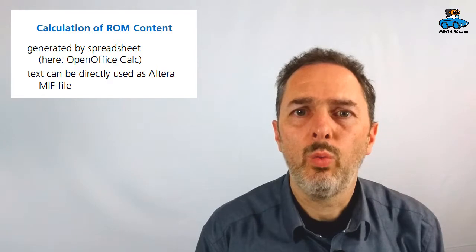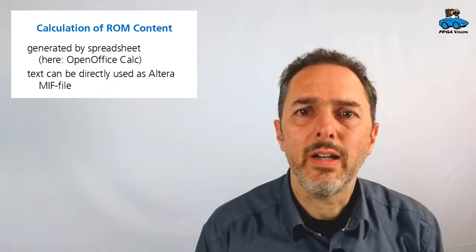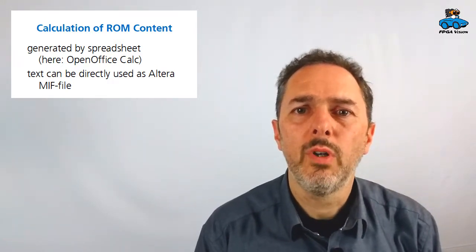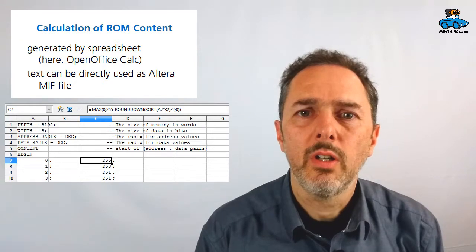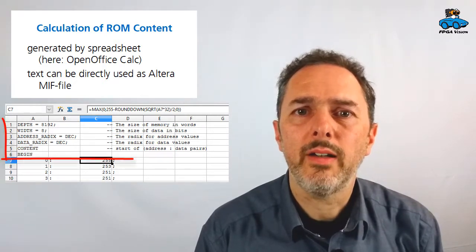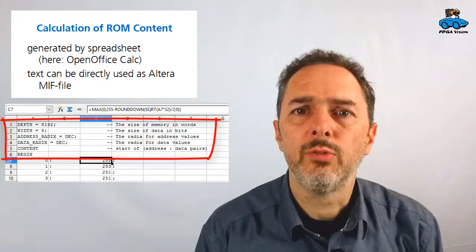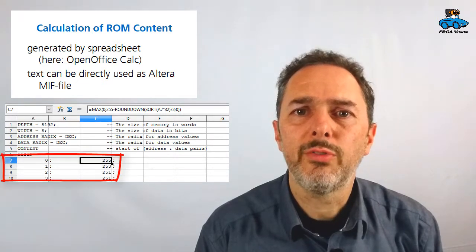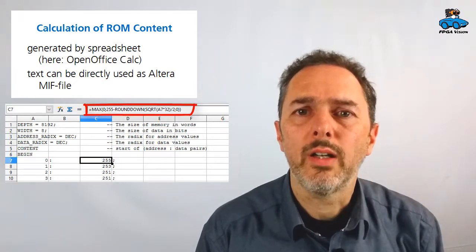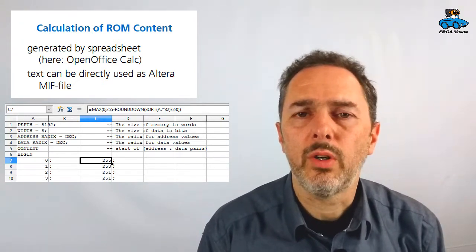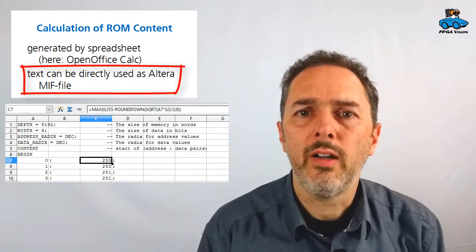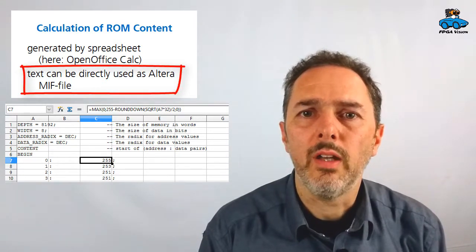Using a ROM for arithmetic calculation is a very common practice. Here, let's have a look how we implement that. We can derive the content of the ROM with a spreadsheet. Here I use OpenOffice Calc. So you have a spreadsheet with some header lines, plus then you have the ROM content, which is the input value. And here, by a formula, we calculate the value that goes into the ROM. And this file can be directly stored as a text file and used as a memory input file, a MIF file for the Altera design flow.